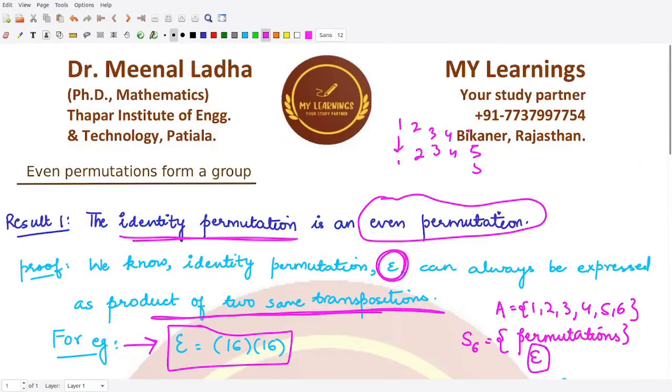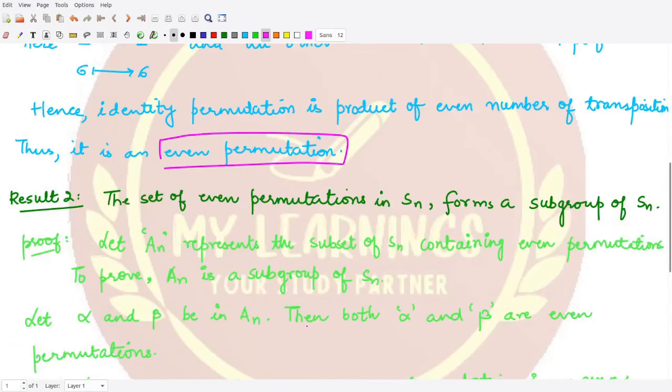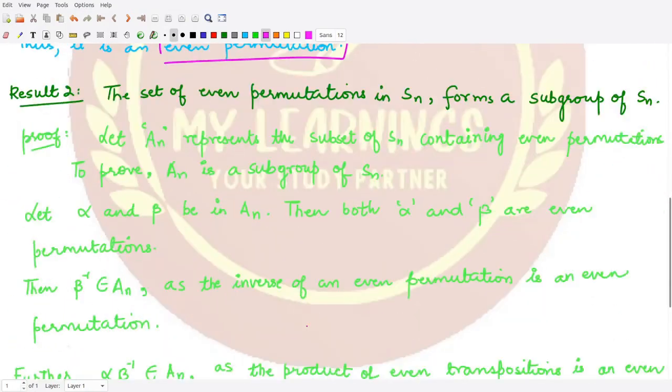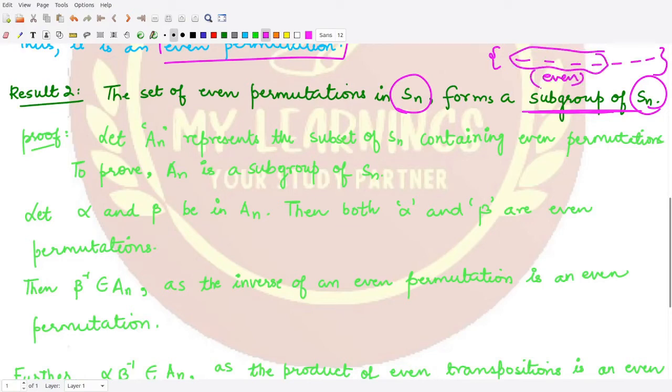Next we will see that the set of even permutations in the set Sₙ forms a subgroup of the symmetry group Sₙ. From the symmetry group, which consists of various permutations, we collect those which are even permutations - which could be decomposed into an even number of transpositions. We are going to prove that this subset of Sₙ is basically a subgroup.